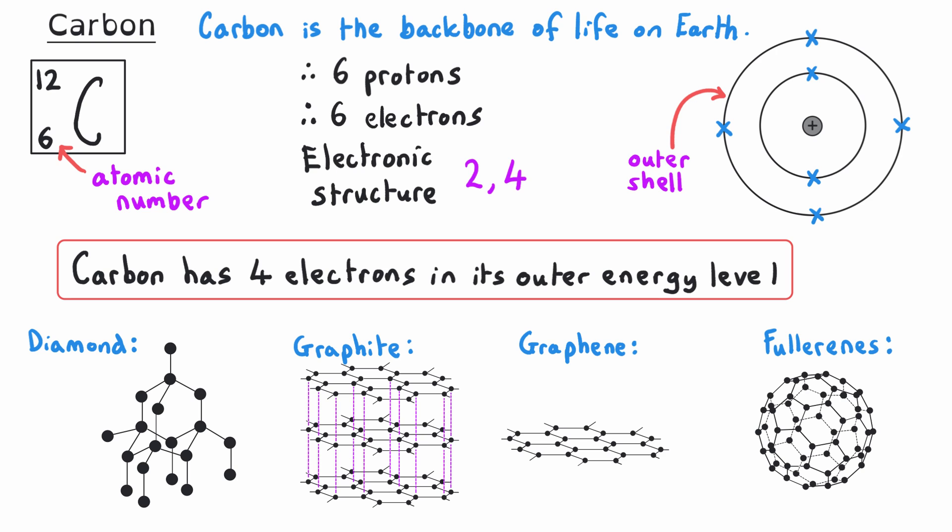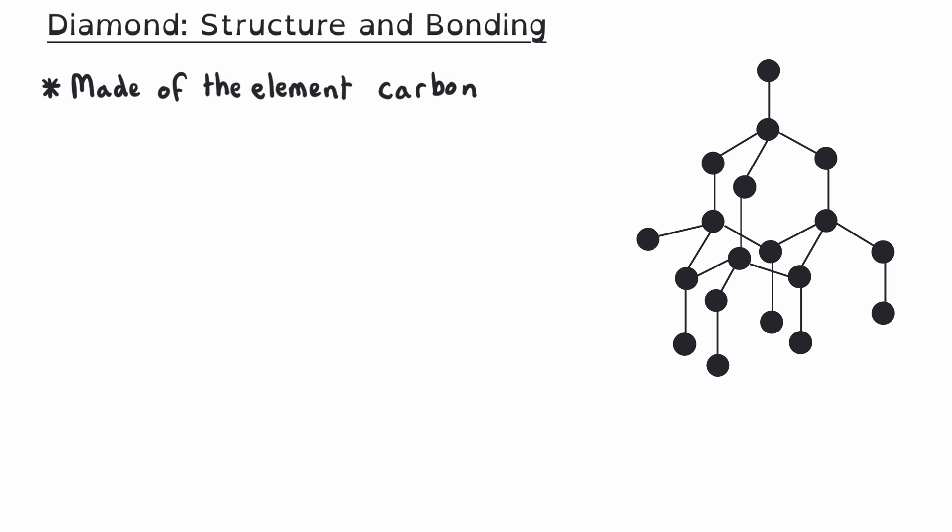You need to be able to recognize these structures from diagrams, explain their structure and bonding, and link this to their properties and uses. To understand the properties of diamond, we first need to know about its structure and bonding. Diamond is made of the element carbon, and only carbon. Since there aren't any other elements involved, the formula for diamond is simply C.